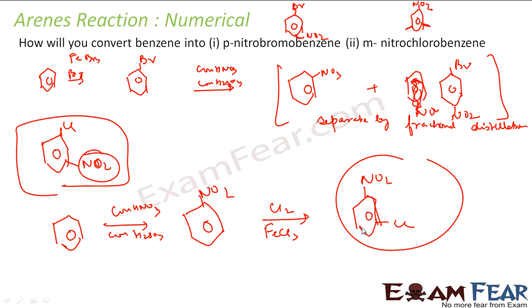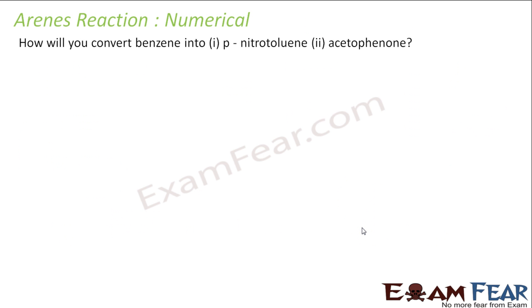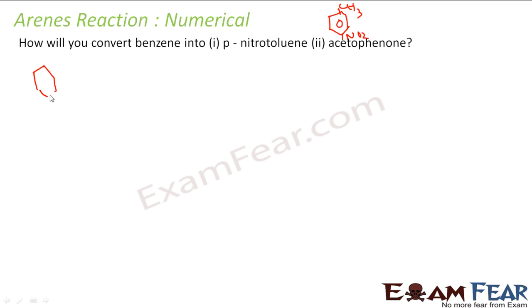The logic is: when you have to add two substituents, understand which one is an ortho/para director and which one is a meta director, and based on that decide which to add first. A similar question: how will you convert benzene to para-nitrotoluene? Para-nitrotoluene has a CH3 group and a nitro group at the para position. If I add the nitro group first, the CH3 group would be directed to the meta position because NO2 is a meta-directing group. So I must add CH3 first, since it is an ortho/para director.